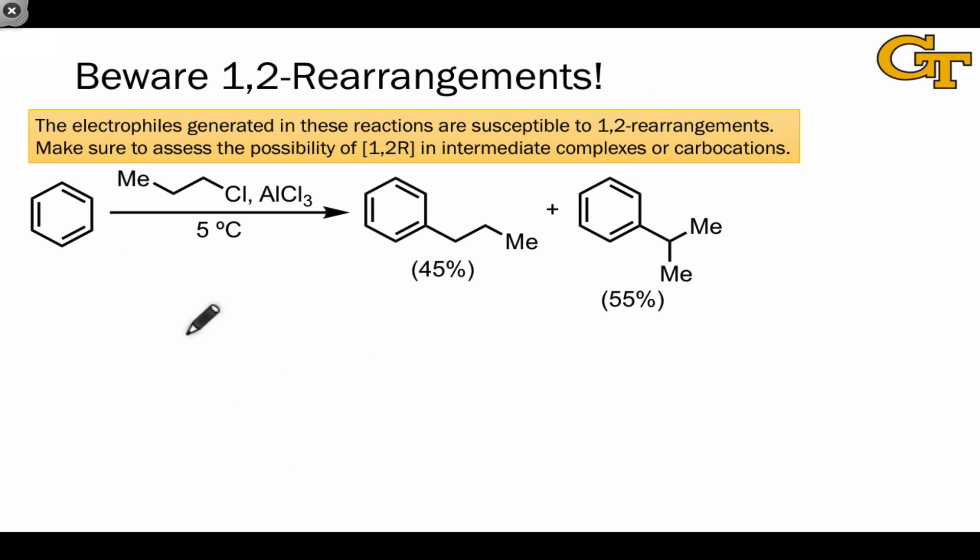The reaction scheme shown on this slide shows us an interesting result. We would expect the two reagents shown here to combine to produce a complex that looks like this. And although this isn't expected to give a carbocation, we would still be led to believe that this could react in a Friedel-Crafts reaction through electron flow like this, leading to propylbenzene, benzene substituted with this linear 3-carbon propyl group.